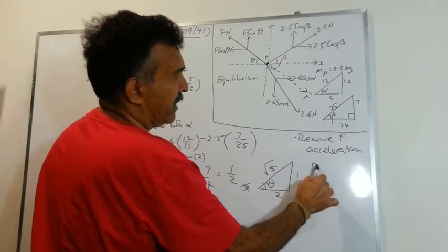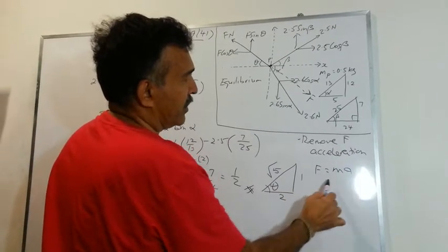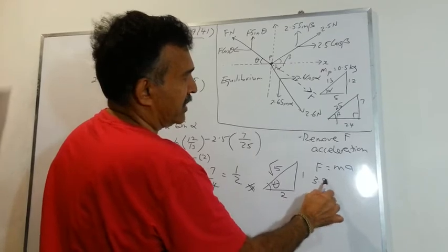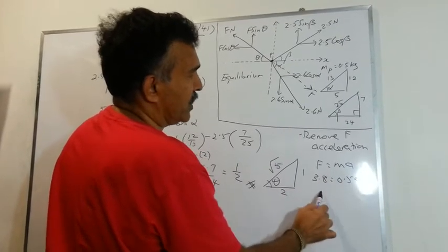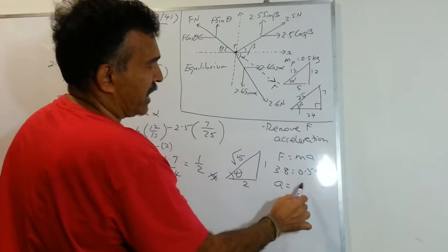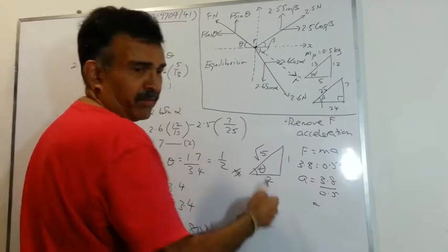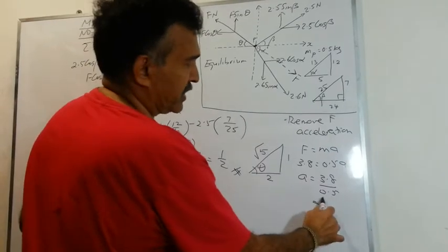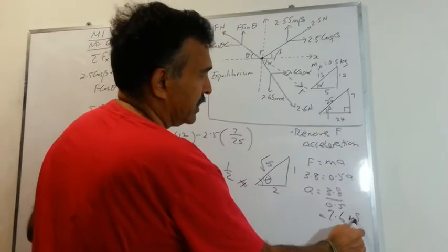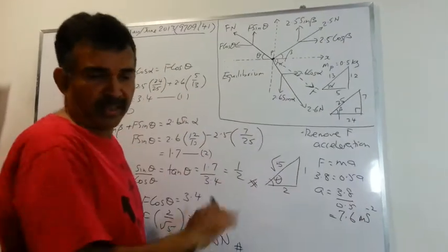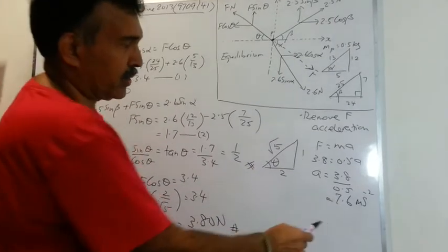So you can write F equals to MA. 3.8, what is M? 0.5 times A. You can use your calculator. And you can write 3.8 over 0.5. And when you do that, you will get your answer at 7.6 meter per second squared. So that's the magnitude of the acceleration. And we are done with that.